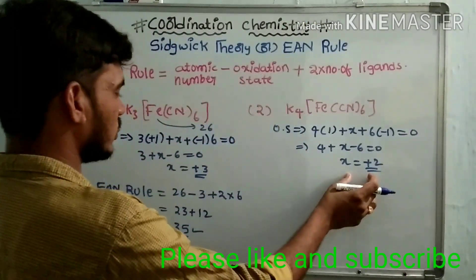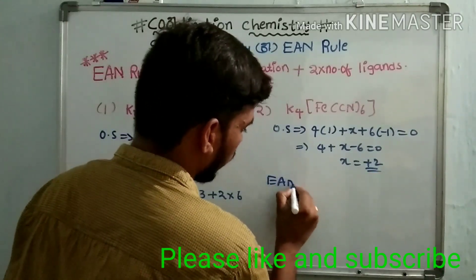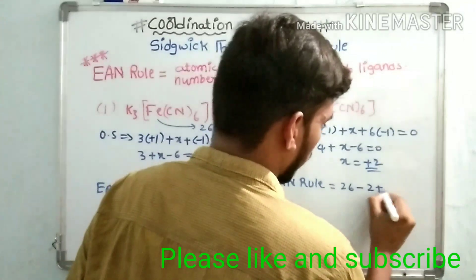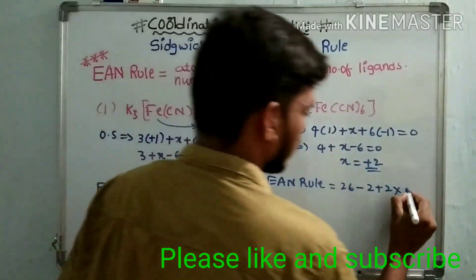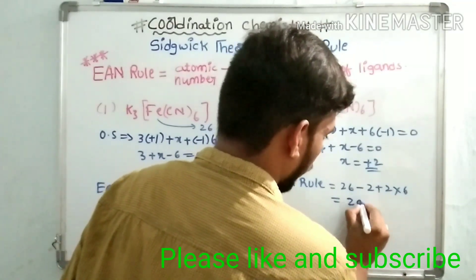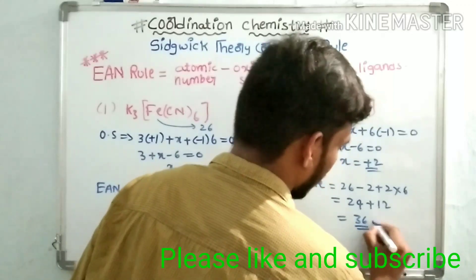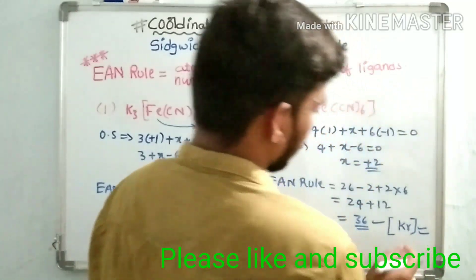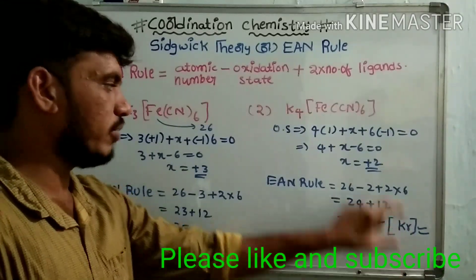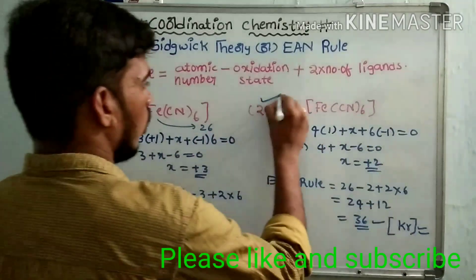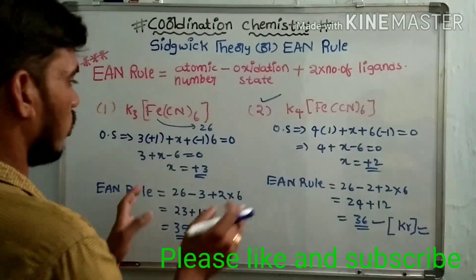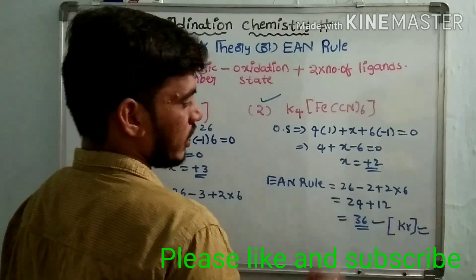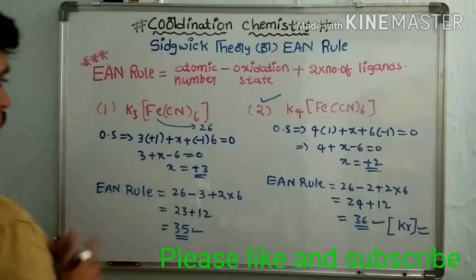With the oxidation state of iron as plus two, the EAN value is: atomic number of iron is 26, EAN = 26 − 2 + 2 × 6 = 24 + 12 = 36. The value 36 is the atomic number of the inert gas krypton. Since this EAN value equals the nearest inert gas element, K₄[Fe(CN)₆] is the more stable metal complex.